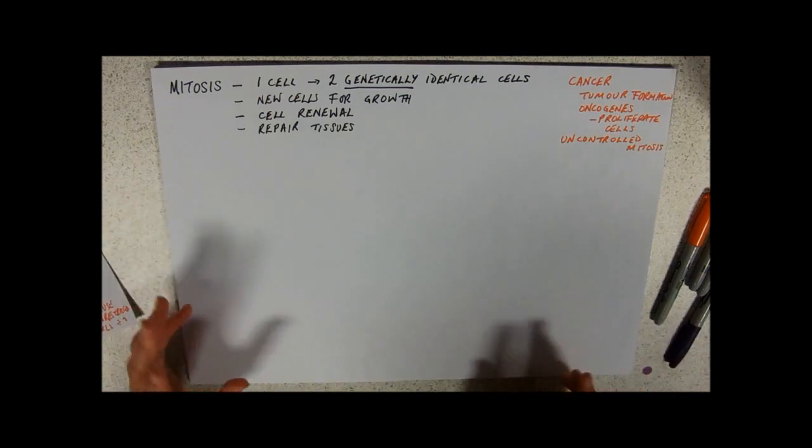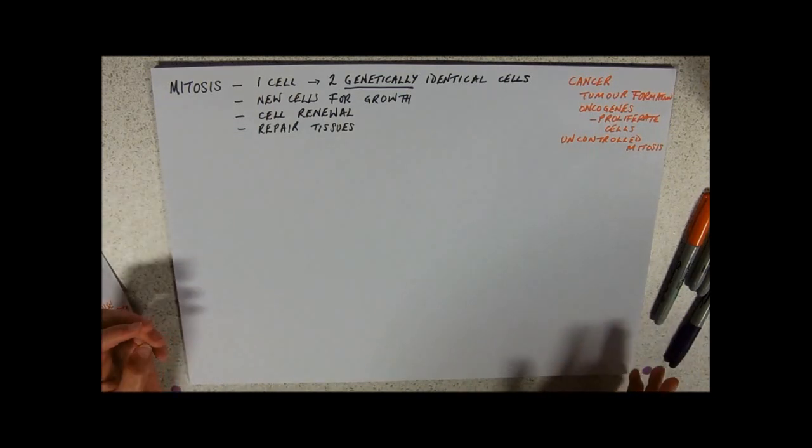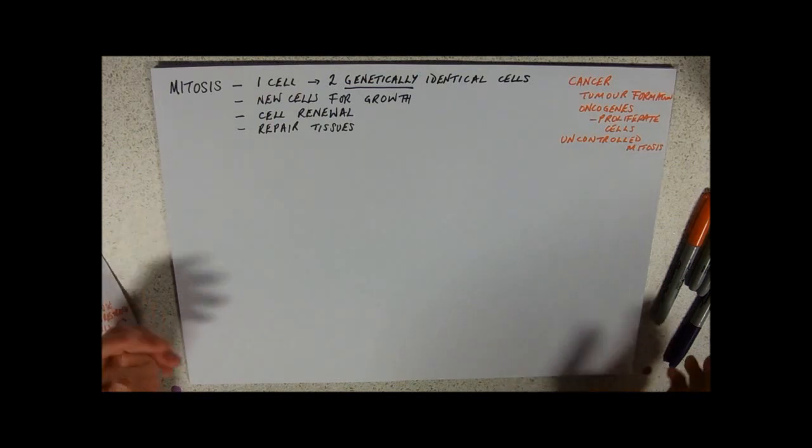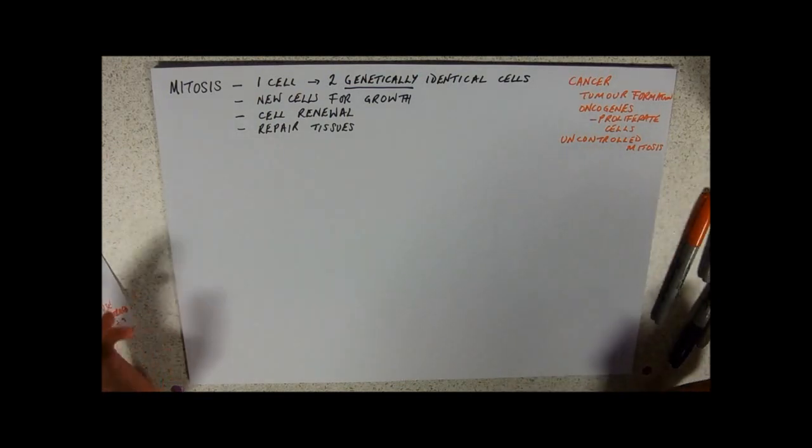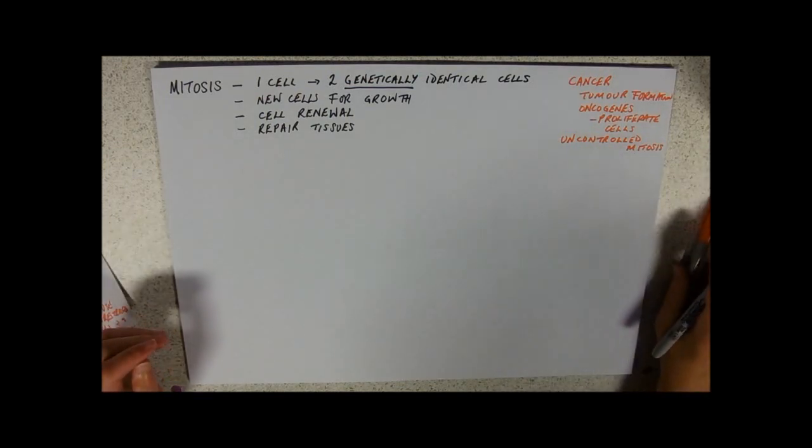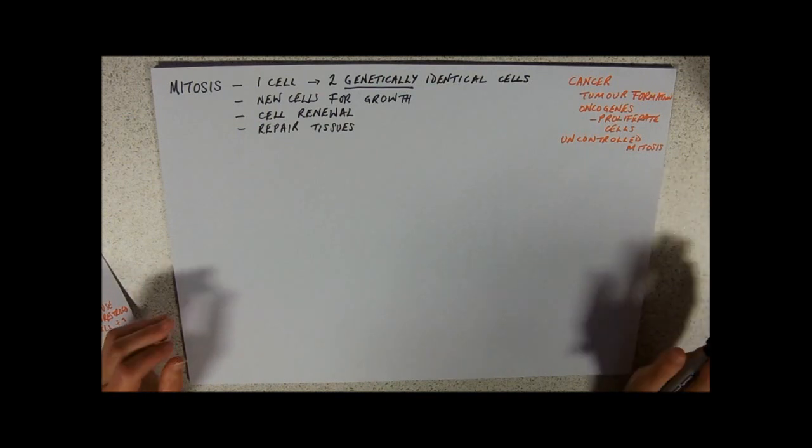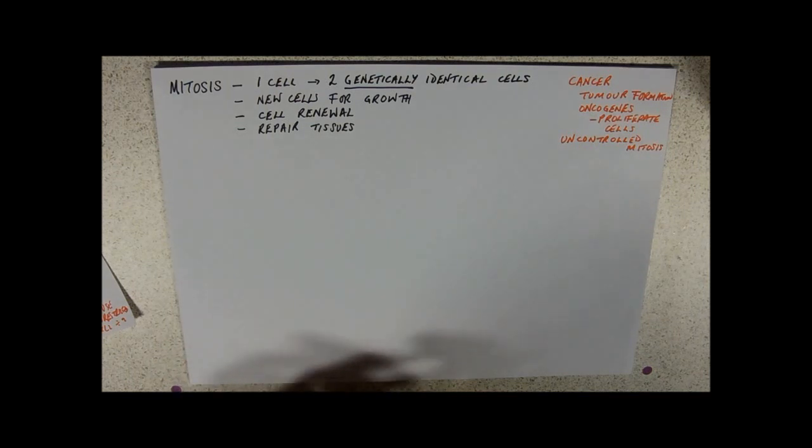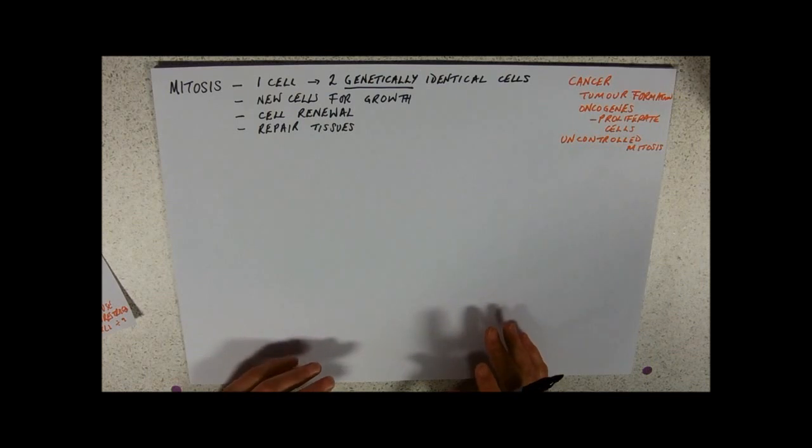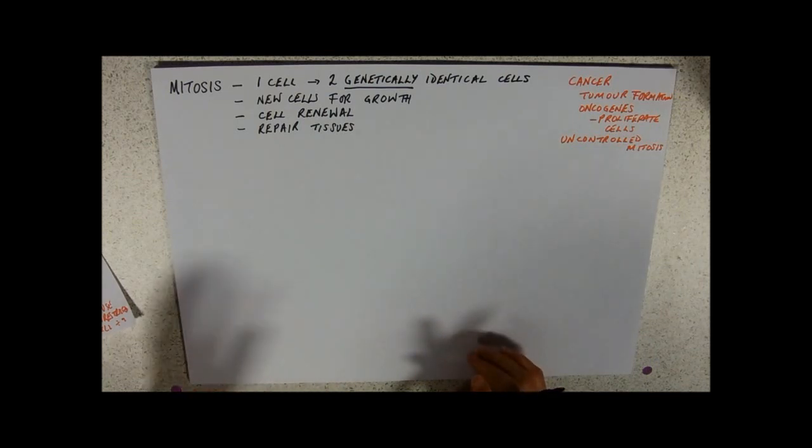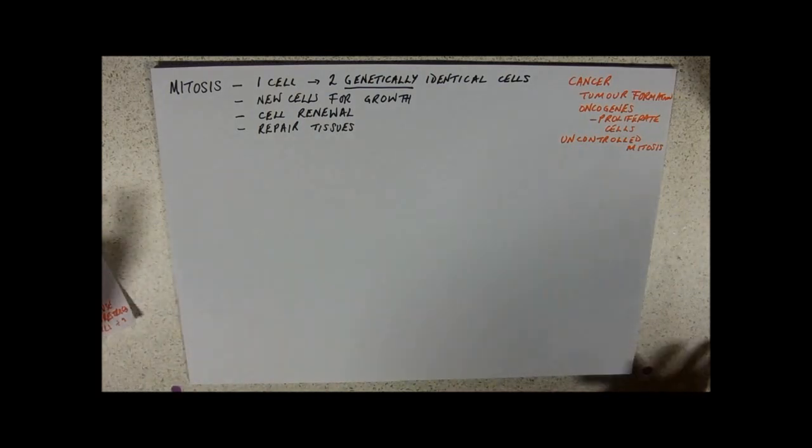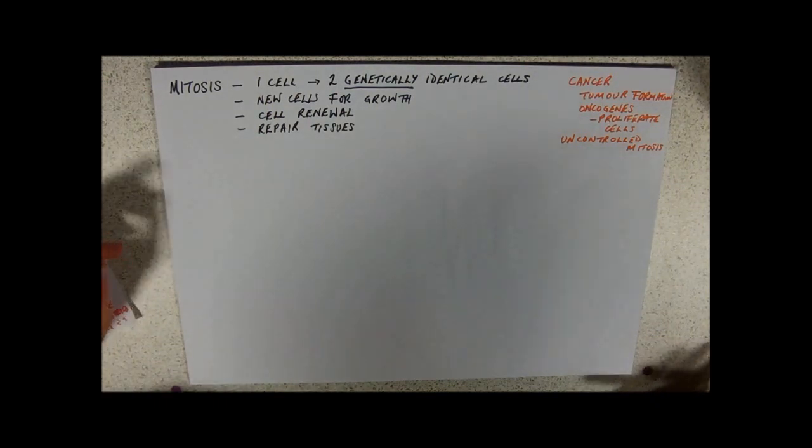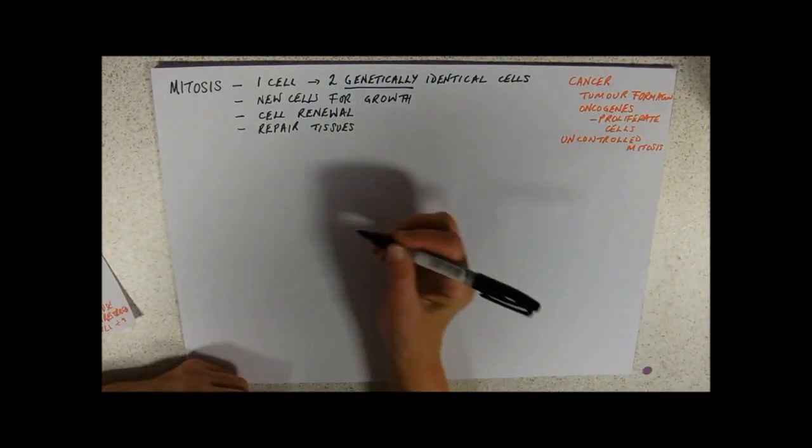So that's dealt with the purposes of it. We've got two things to do now. You need to know the phases of mitosis. I was going to do something clever with pipe cleaners, but I've decided to draw it instead. And you need to be aware of the root tip squash experiment. So let's start with the phases. You need to be able to recognize mitosis from diagrams and from pictures of the root tip squash.